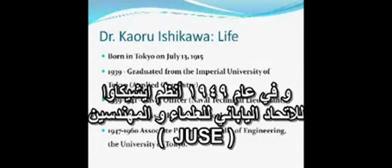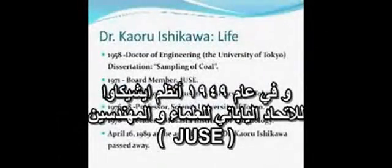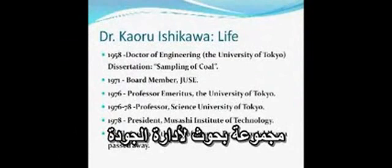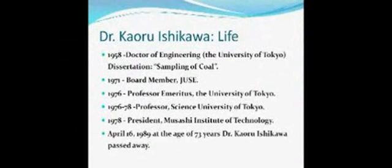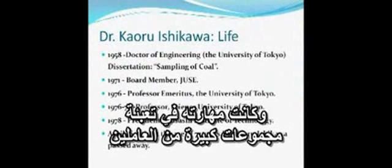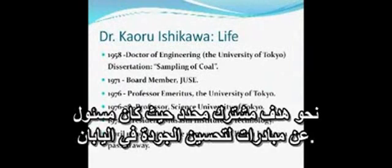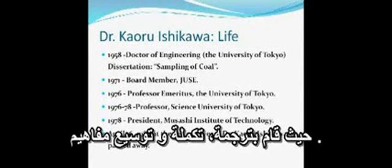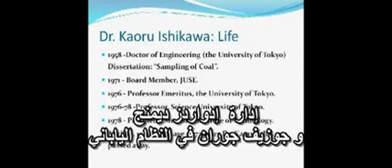In 1949, Ishikawa joined the Japanese Union of Scientists and Engineers quality control research group. It was his skill at mobilizing large groups of people towards a specific common goal that was largely responsible for Japan's quality improvement initiatives. He translated, integrated, and expanded the management concepts of Edward Deming and Joseph Juran into the Japanese system.